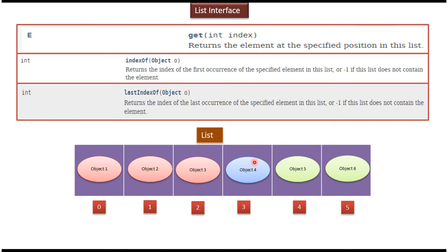Suppose I want to get Object 4 from the list. I call the get() method by passing the index — if I pass index 3, I get Object 4. To find the position of Object 4, I call the indexOf() method with Object 4, which returns its position as 3. The lastIndexOf() method can also find a particular object's position. The indexOf() method returns the index of the first occurrence of the specified element in the list.